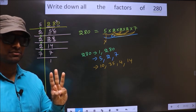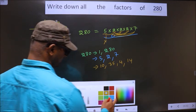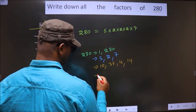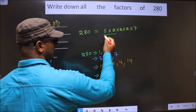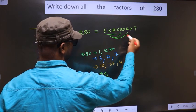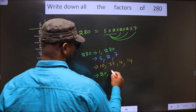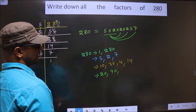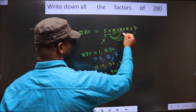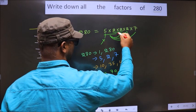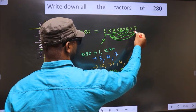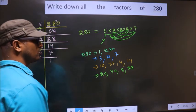Now you take a combination of 3 numbers. First I fix 5 and 2: 5×2=10, then 10×2=20. When 20 is combined with 7, that's 5×2=10 and 10×7=70. Now leave 5 and take the three 2s: 2×2=4, then 4×2=8. When combined with 7, 4×7=28. No more combinations possible.